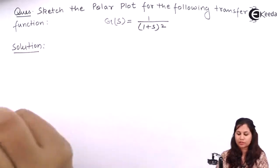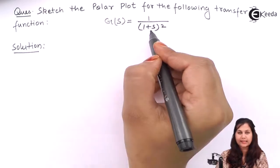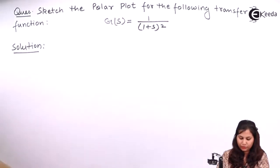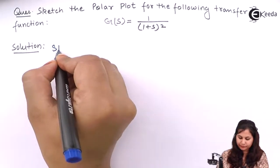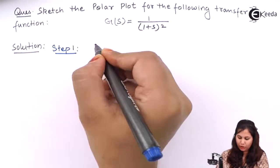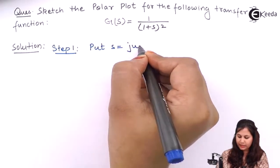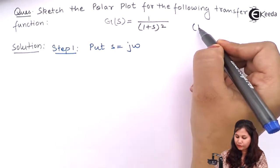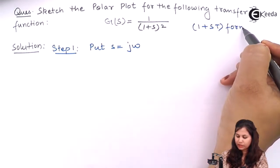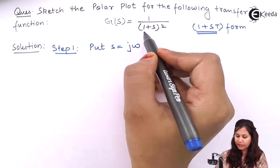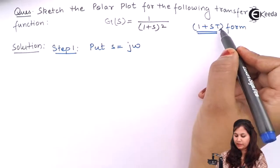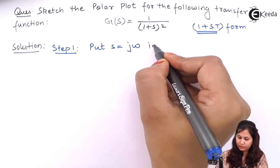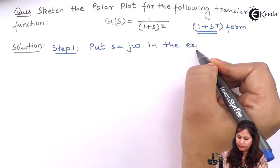To sketch the polar plot, the first step is to put s = jω, that is replace s by jω. The expression 1 + s is of the form 1 + sT, so we need not convert this transfer function — it is already given in 1 + sT form, where T equals 1. So putting s = jω in the expression for the transfer function.